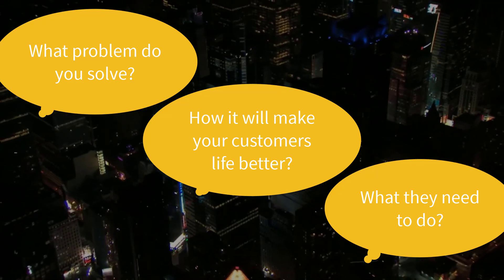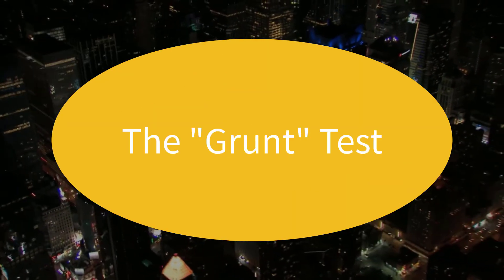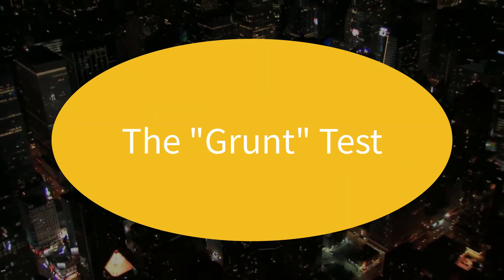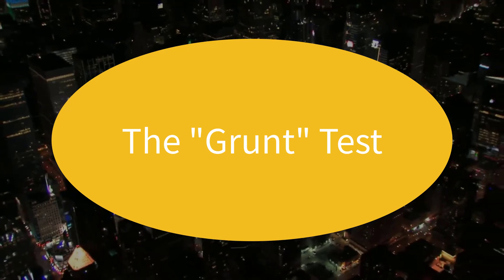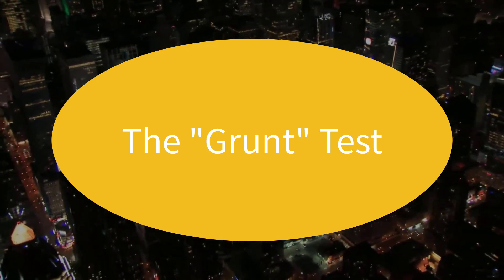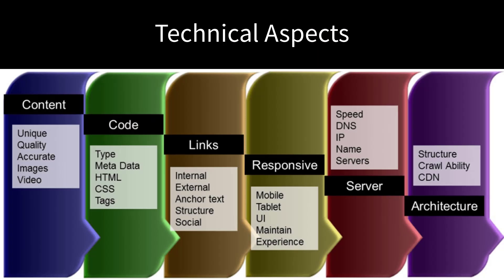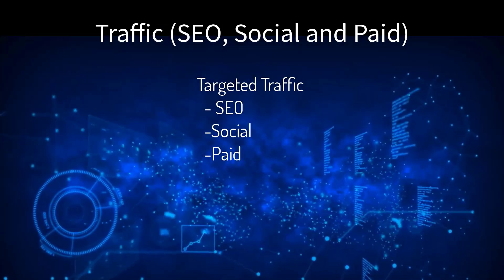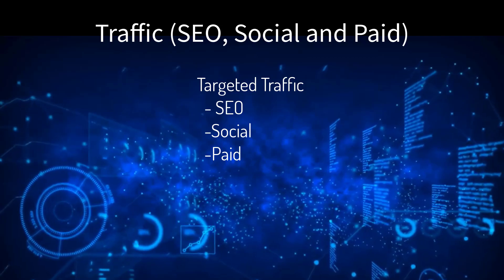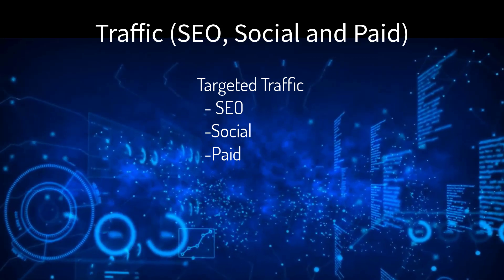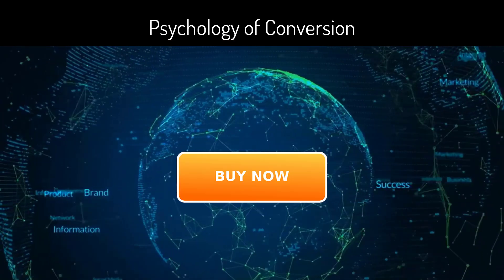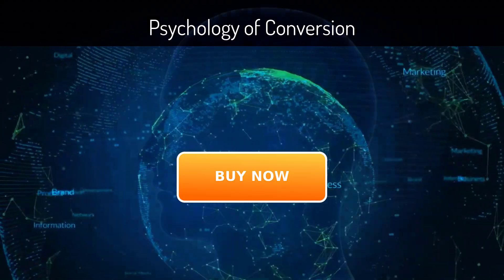This is called the grunt test. All online marketing must have three elements in alignment: the technical aspects — servers, layout, code structure — the traffic — SEO, social, and paid — and the psychology of conversions.